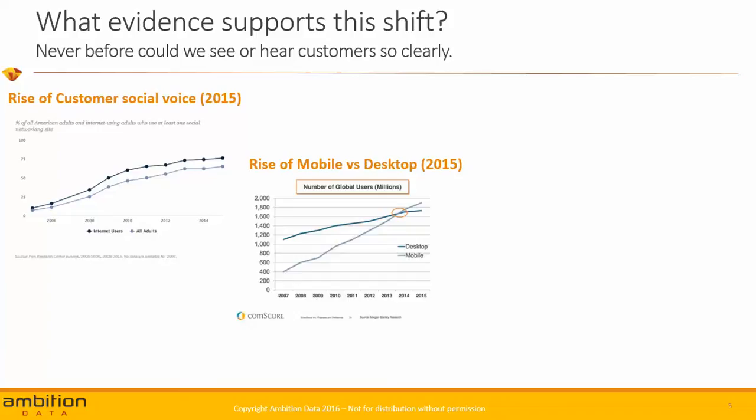We've also seen the rise of mobile over desktop. It's not the device itself that is indicative, or even the point where they pass each other. It's the fact that when people use mobile devices, there's more and more information flowing to us about who people are, what they want, what they need to do at a particular time. So we get lots of contextual information — much more than we ever had. And it's these two pieces that help us see and hear our customers more clearly than ever before.